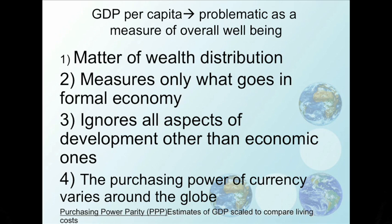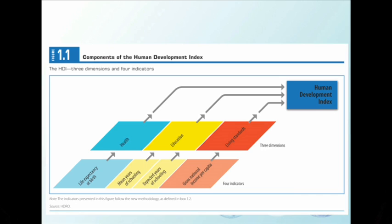Another issue is that the purchasing power of currency varies around the world. So GDP needs to be linked to purchasing power parity, which scales that amount of money to how much it actually costs people to live in a specific location. Your book talks about the Human Development Index as a better holistic measure of overall development, and the activity you'll do this week looks at the HDI as a measure.